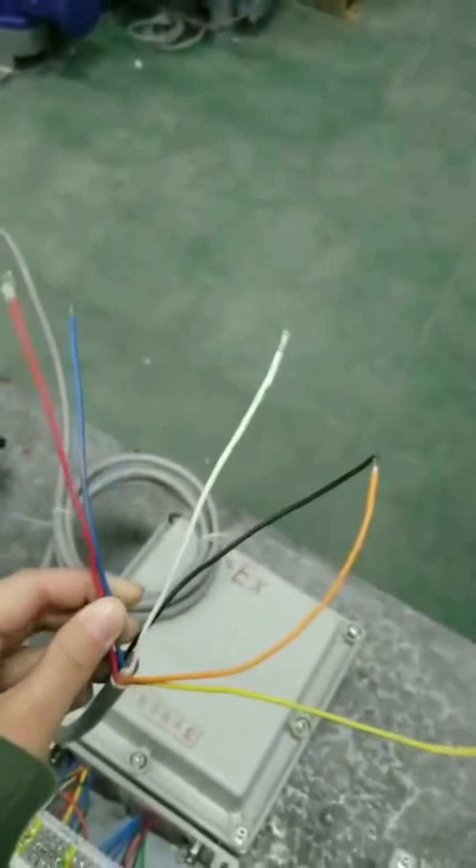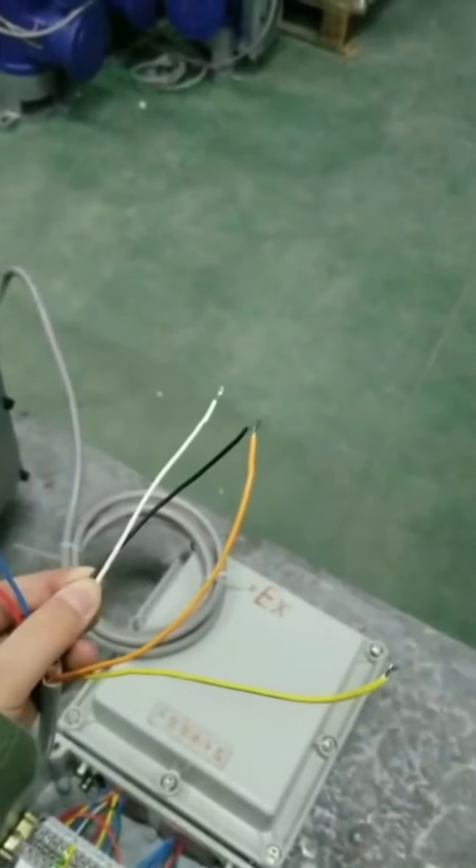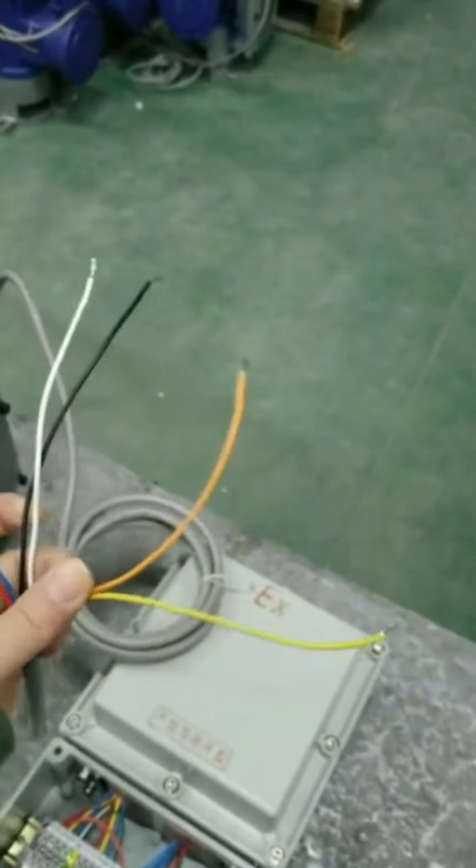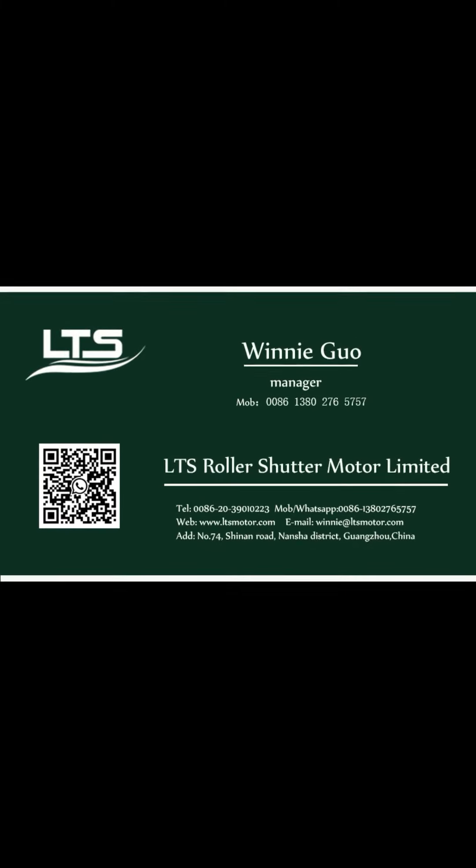The red and blue wires are down limits. The white and black wires are up limits. The yellow and orange are brake. The green and yellow...